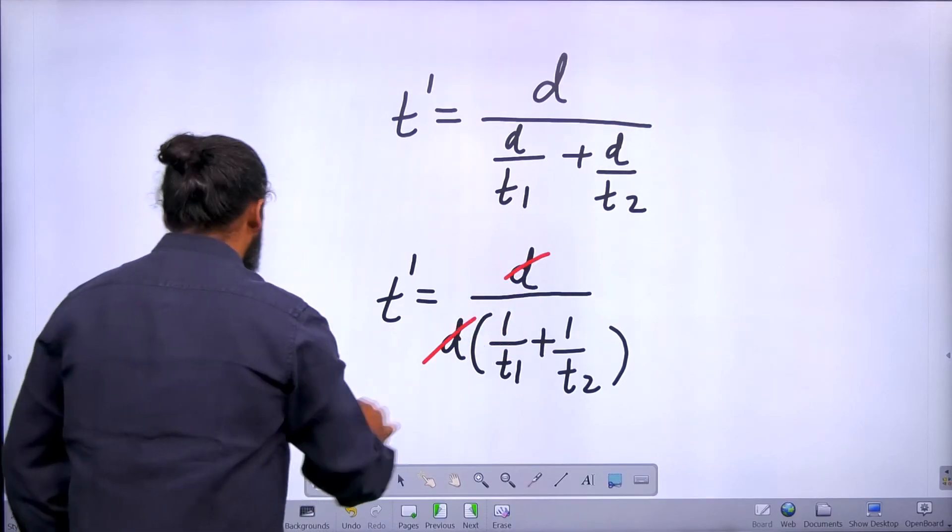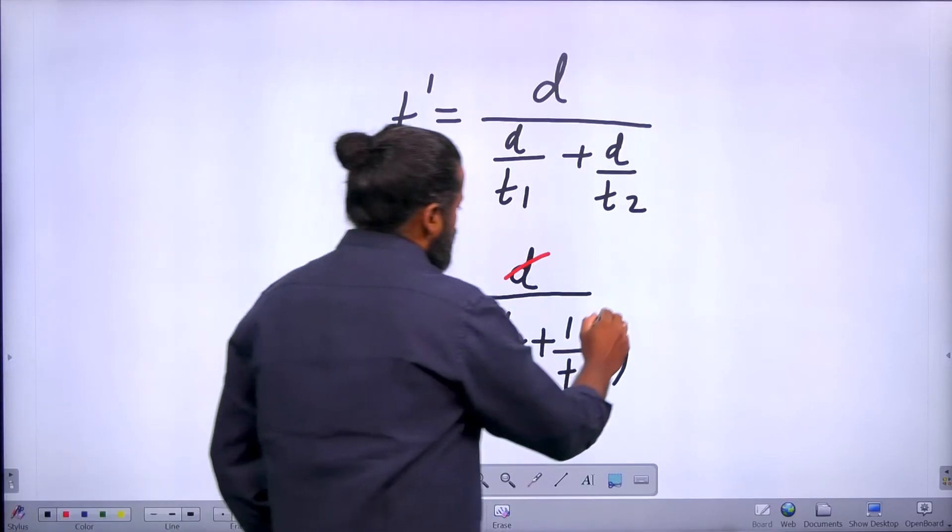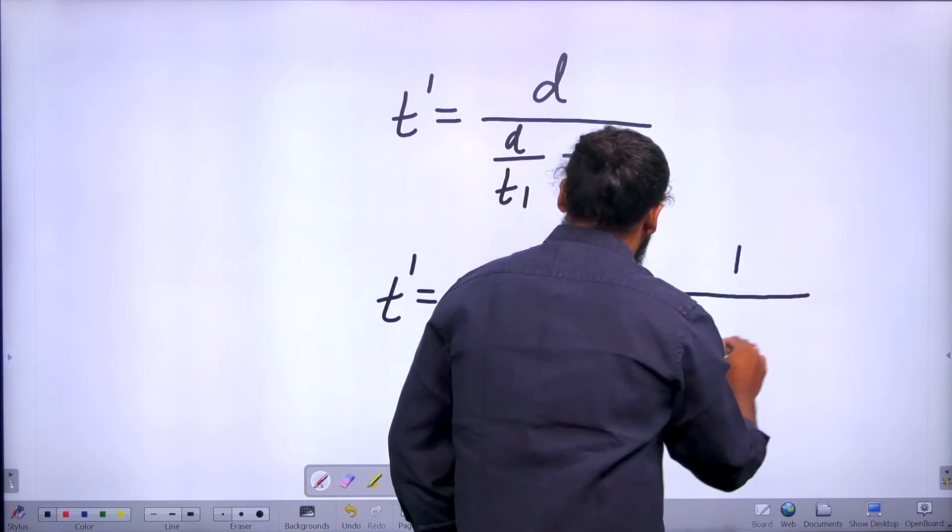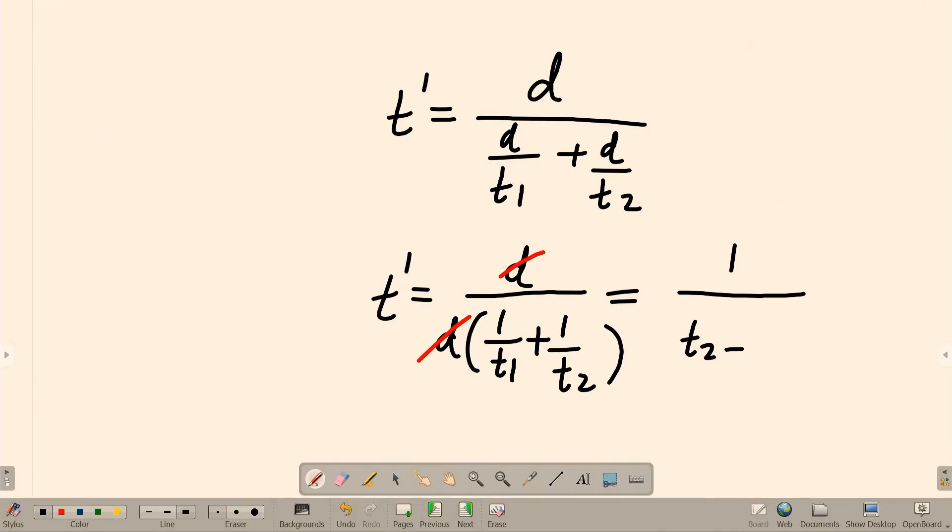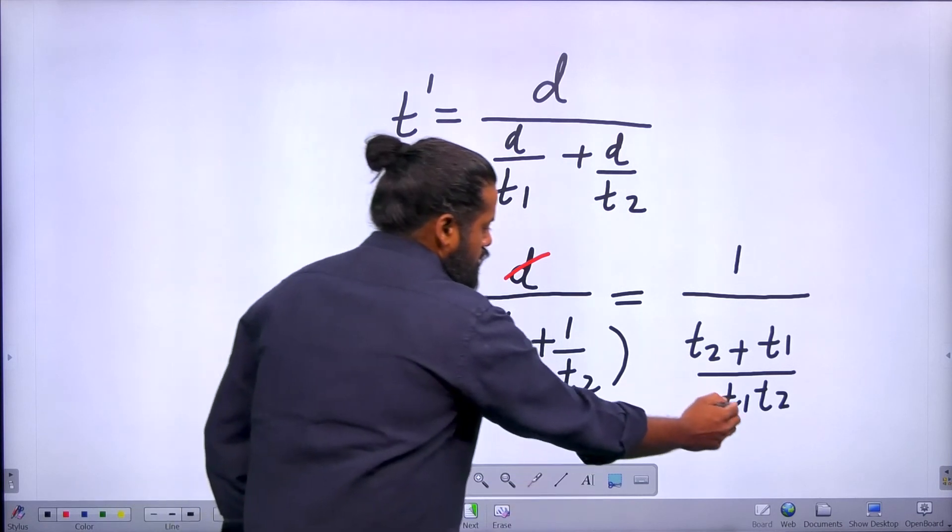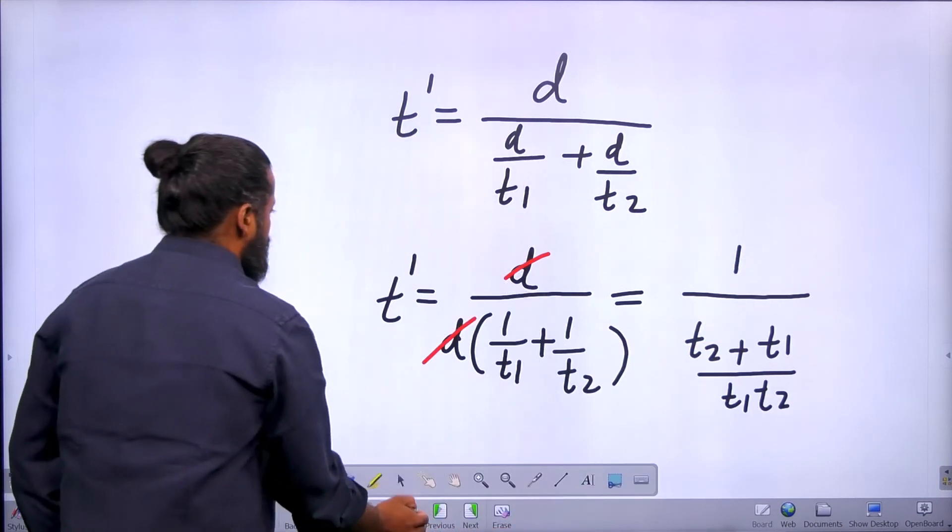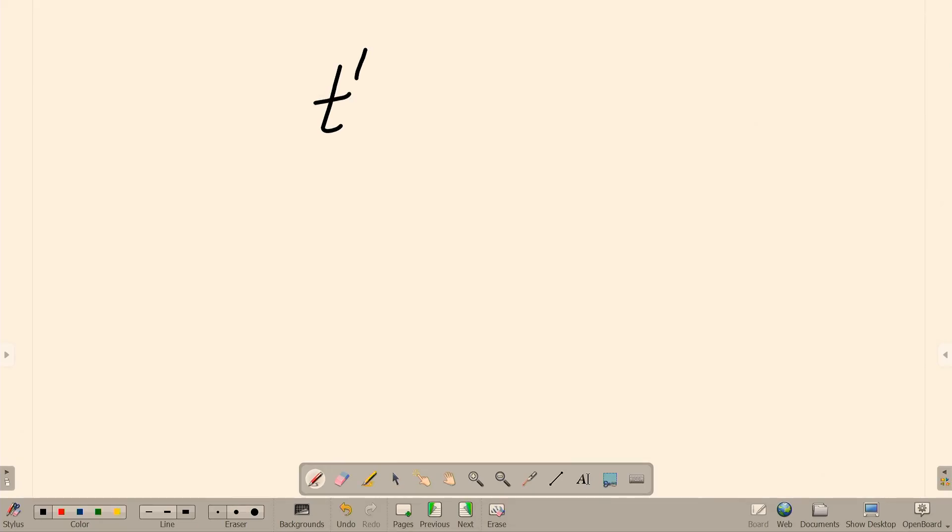So this D will be cancelling out. So remaining how much will be there? This is equal to 1 divided by T2 plus T1 divided by T1 T2. This will come to the denominator, this will come to the numerator. So we can say that T dash is equal to T1 T2 divided by T1 plus T2 is the correct answer.